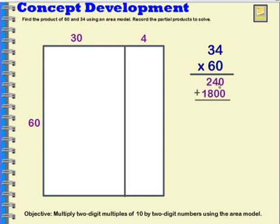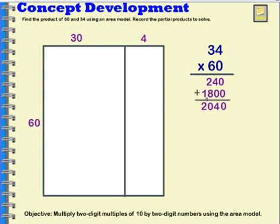Adding 240 and 1,800 together: 0 plus 0 is 0, 4 plus 0 is 4, 2 plus 8 is 10, and 1 plus 1 is 2. This is how I record partial products — the product of each portion written here, then added together to get the product of 34 times 60, which is 2,040.